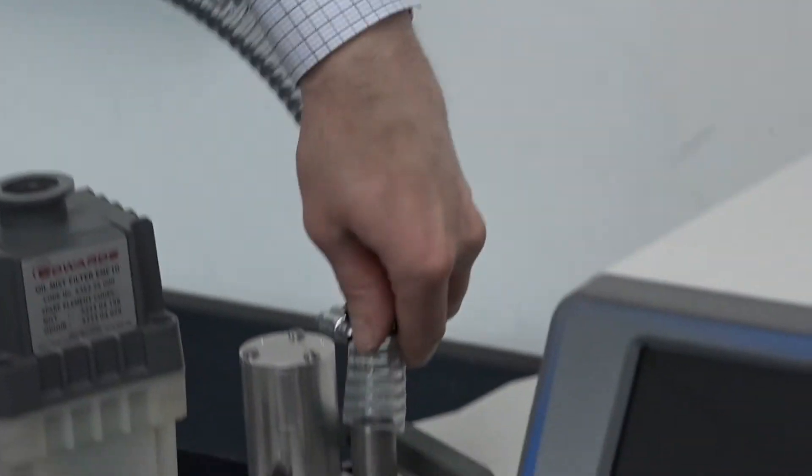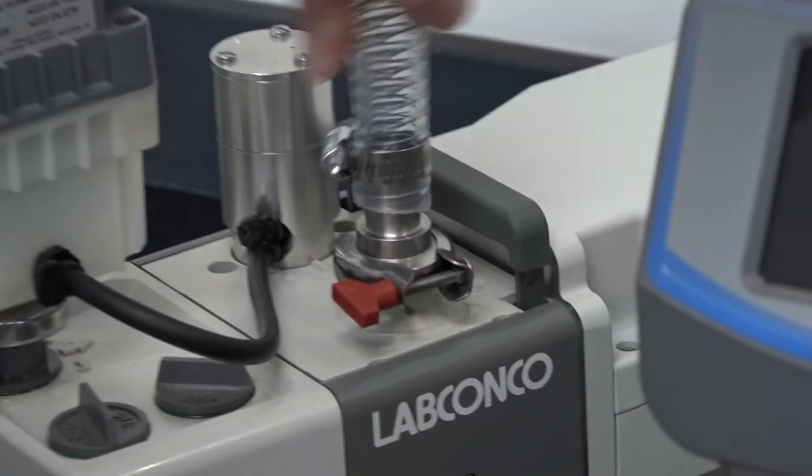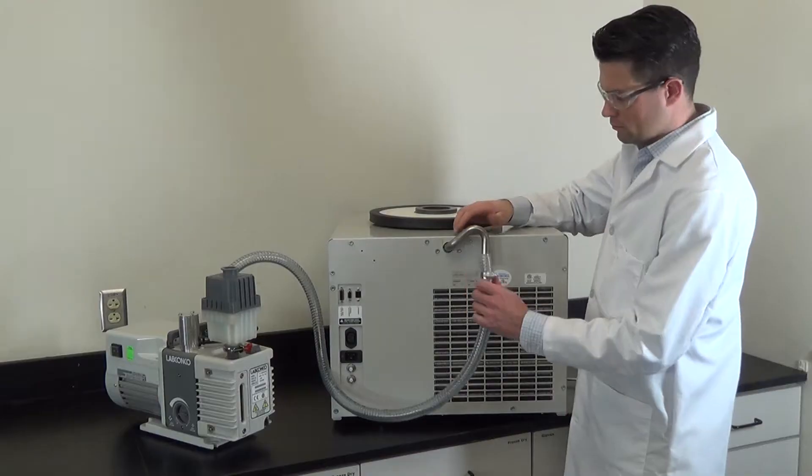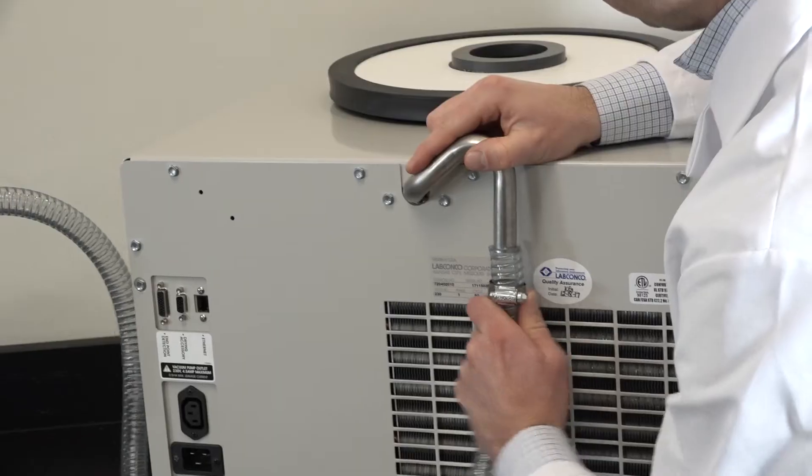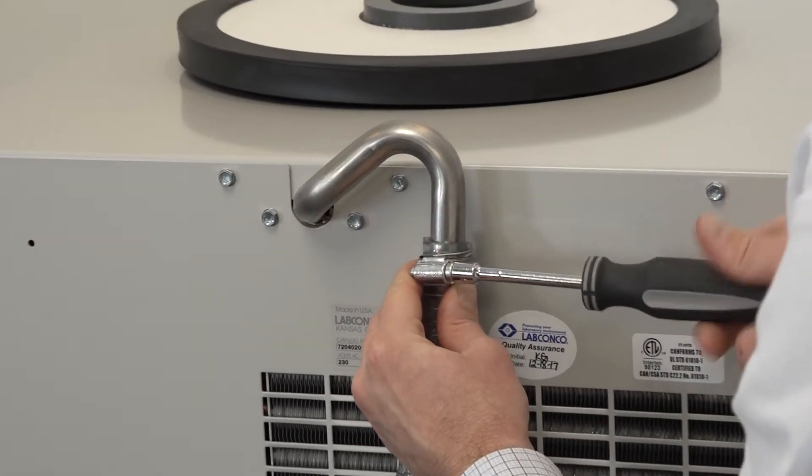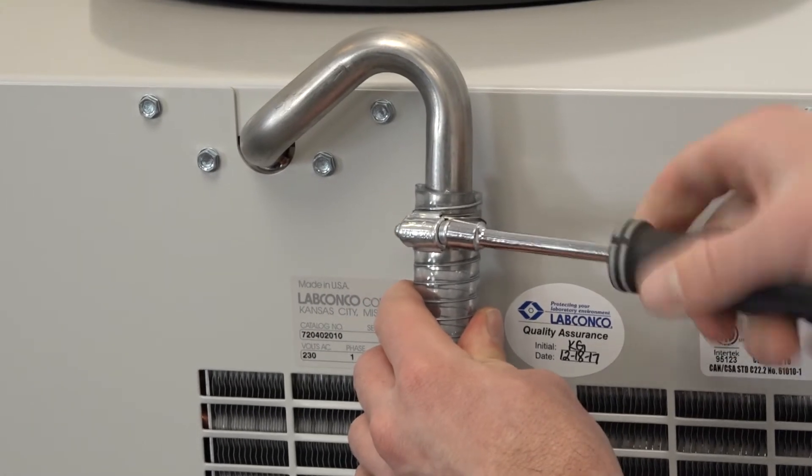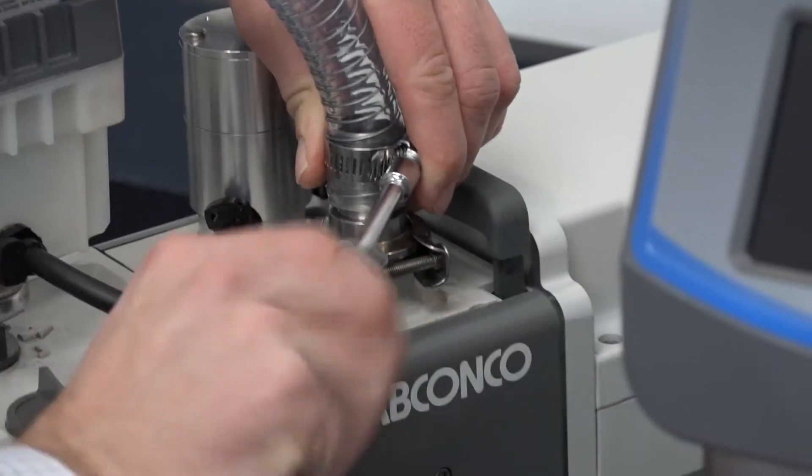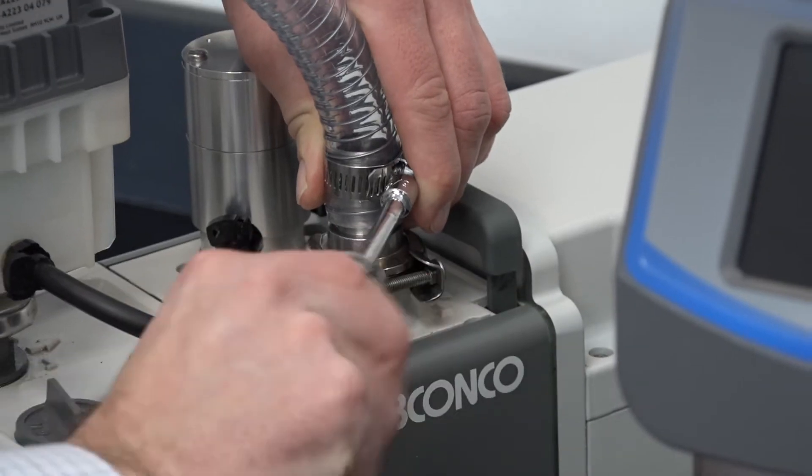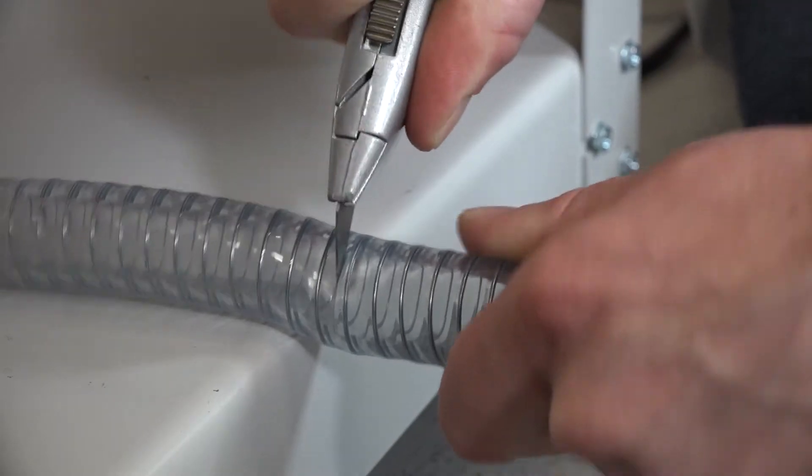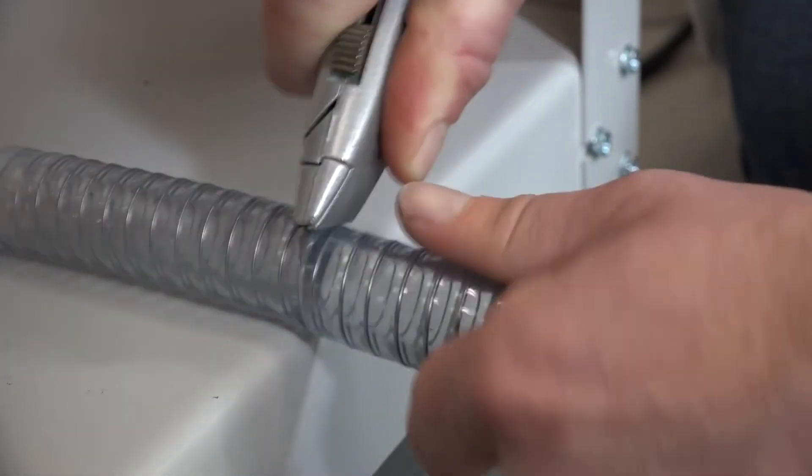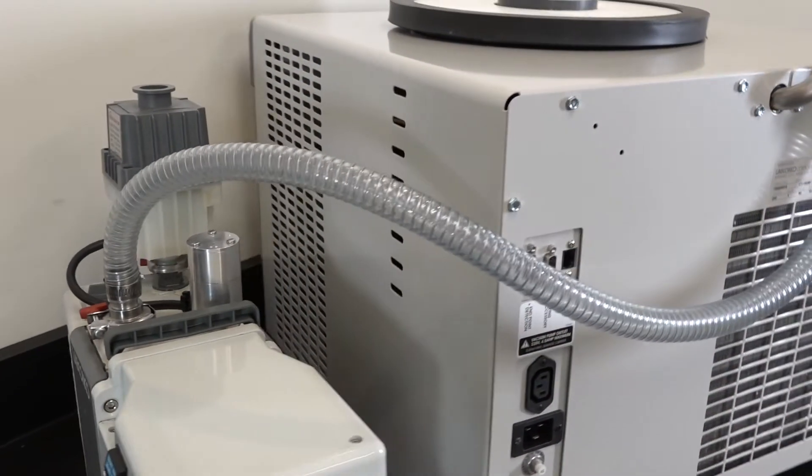Use a vacuum pump that can accept the ¾ inch ID vacuum hose provided. Use the hose clamps provided to attach one end of the vacuum hose to the outlet port of the Freezone. Tighten the hose clamps with a ¾ inch nut driver or a flathead screwdriver. Connect the other end of the hose to the inlet port of the vacuum pump. If necessary, cut the hose to allow for a gentle bend without kinks.